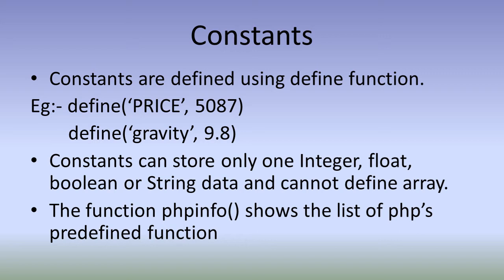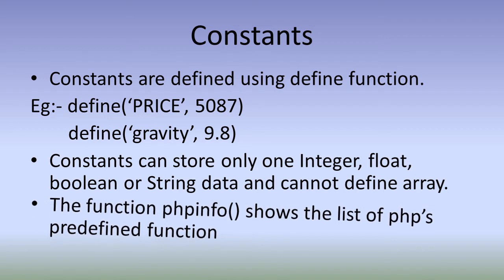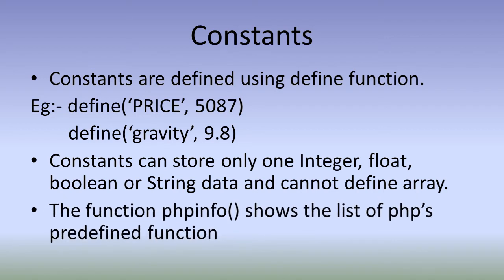In the first we are giving price that is equal to 5087 and in the second we are giving gravity that is equal to 9.8. Price is in capital letters, gravity is in small letters. Both are allowed in PHP, but if we differentiate constants with capital letters it will be easy for program readability. Constants can store only integer, float, boolean or string data and cannot define array. We cannot have an array as a constant.